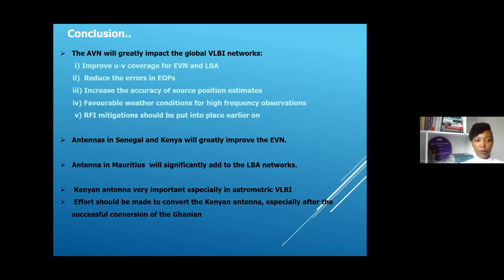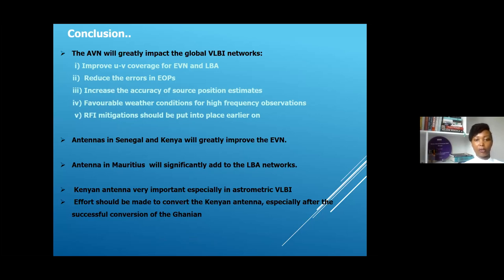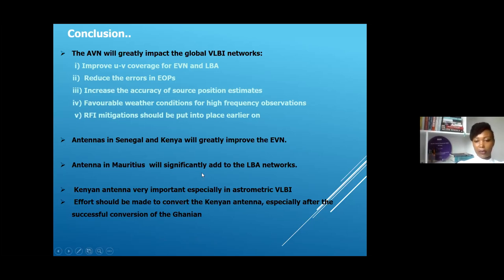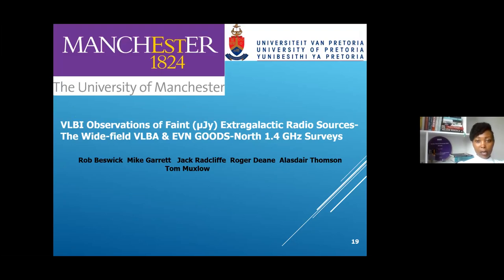In conclusion, the AVN will greatly impact global VLBI networks: improving UV coverage for the EVN in the Northern Hemisphere and the LBA in the Southern Hemisphere, reducing errors in Earth orientation parameter measurements, and increasing the accuracy of source position estimates. Specific antennas such as Senegal and Kenya will greatly improve the EVN, and an antenna in Mauritius will significantly add to the LBA network.